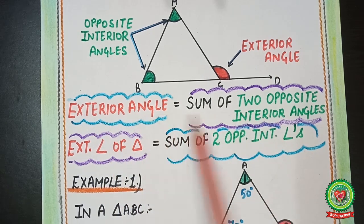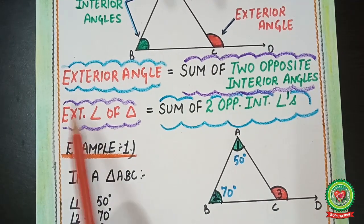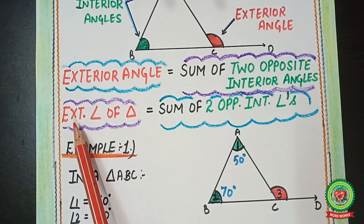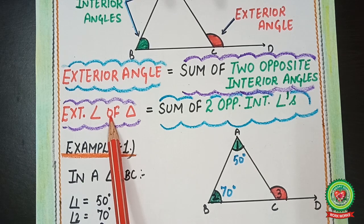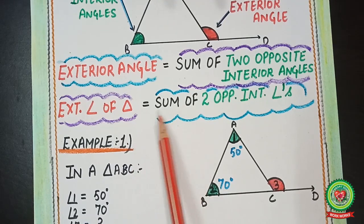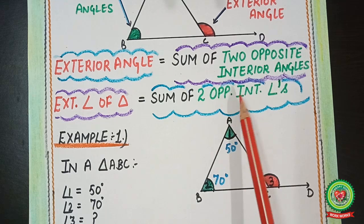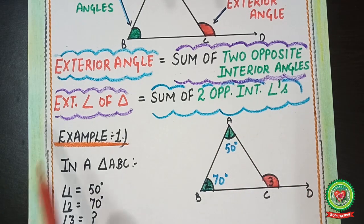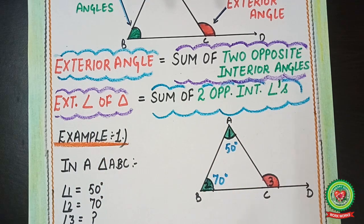We can write this property in short form: ext. angle of triangle equals sum of two opposite interior angles. You write 'ext' for exterior, use the angle symbol, and the triangle symbol. 'Opp. int. angle' stands for opposite interior angle. So: exterior angle of triangle equals sum of two opposite interior angles.